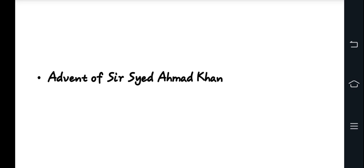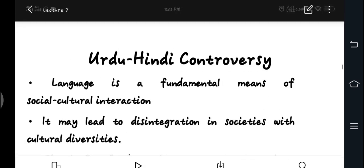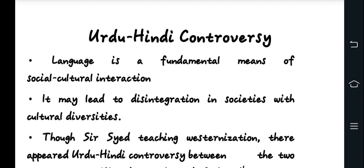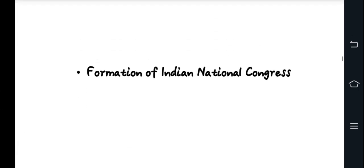The second point was the Urdu-Hindi controversy, which was a cultural conflict. The United Provinces in the late 19th century experienced linguistic divisions between Hindus and Muslims. This conflict also included the issue of a separate Muslim identity. Then came the political mobilization through the formation of the Indian National Congress.